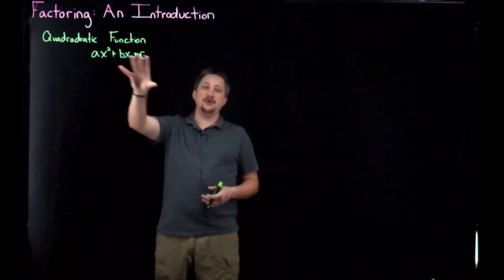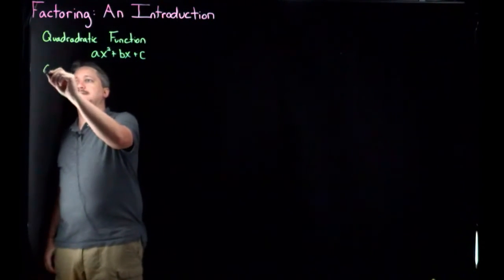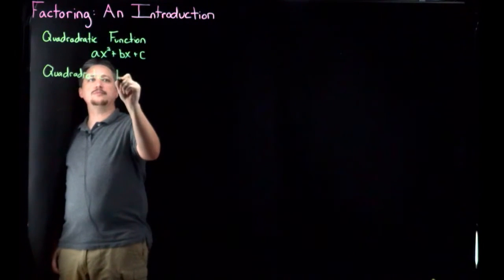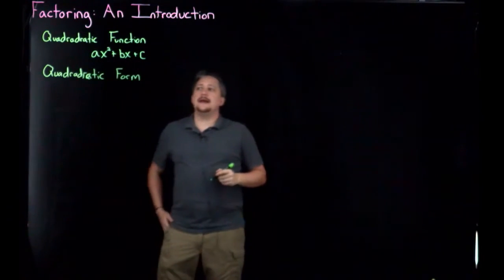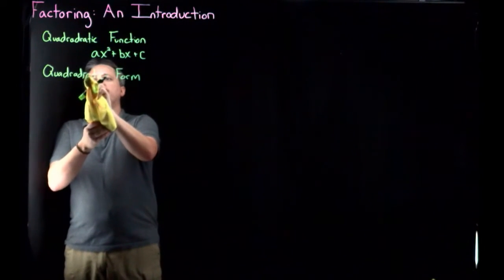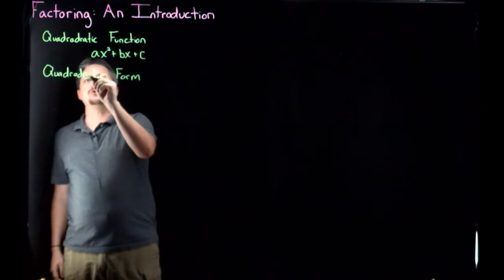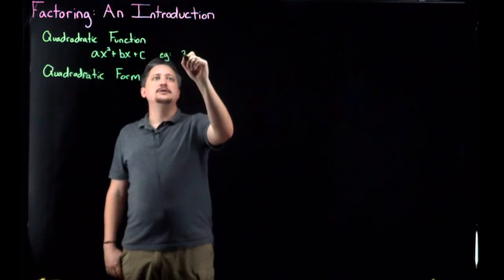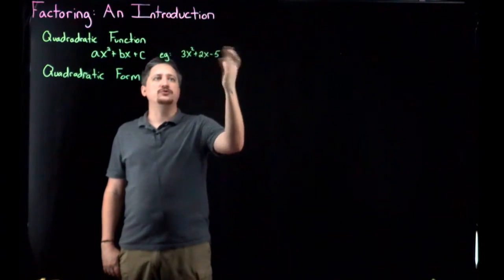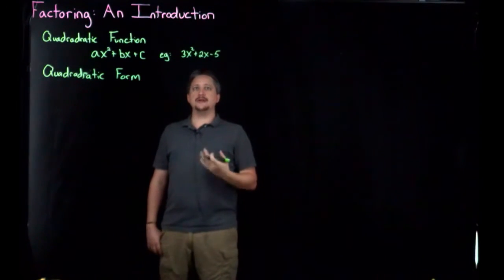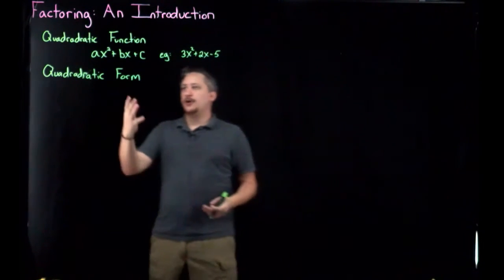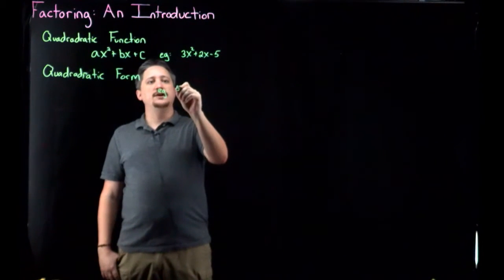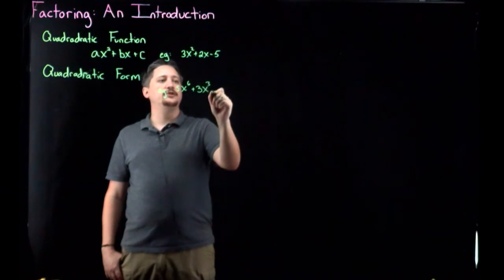So this is the actual quadratic polynomial. A quadratic form is something that appears different but is in some fundamental structural way the same thing. An example of a quadratic function could be something like 3x squared plus 2x minus 5 — we know it's quadratic because it's a degree-2 polynomial. A quadratic form, on the other hand, could be something like 5x to the sixth plus 3x cubed minus 14.